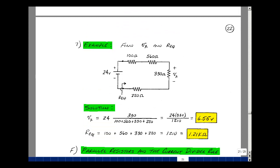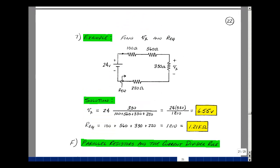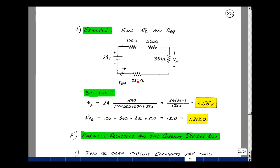Let's do an example. Let's find the voltage V sub x and R equivalent in this series circuit. 24 volts, 100 ohms, 560, 330, and 220.